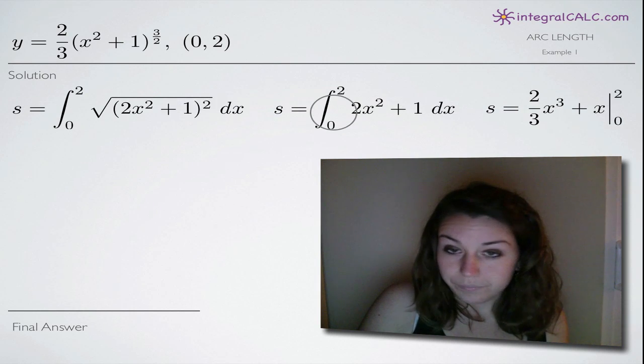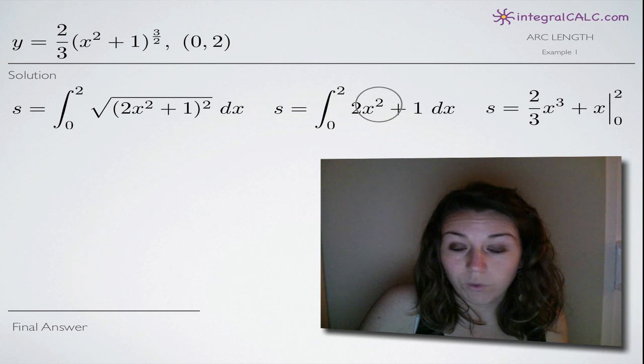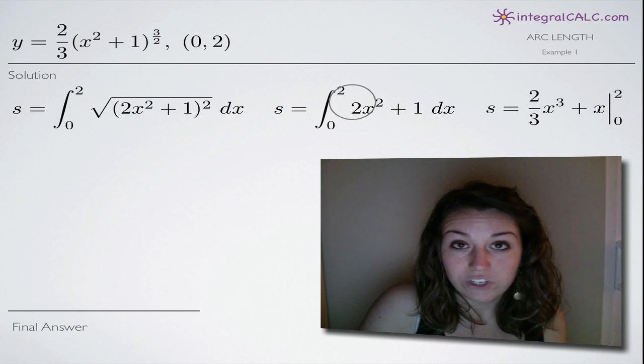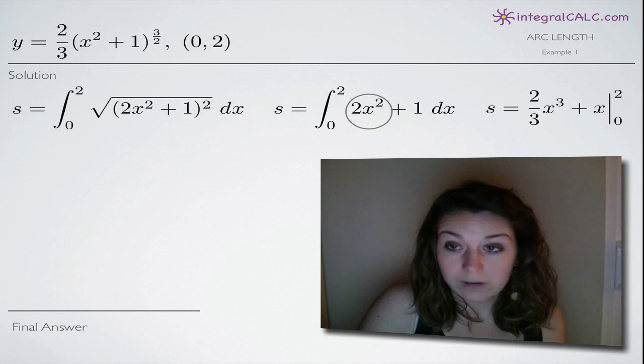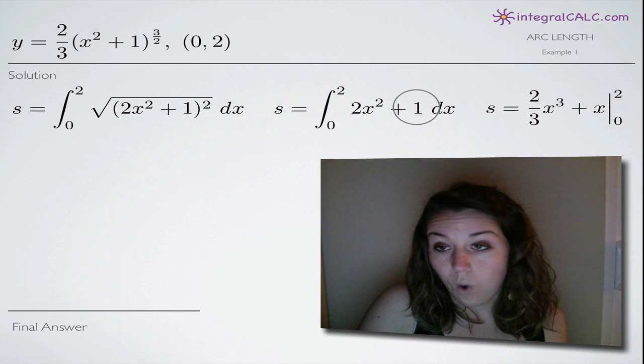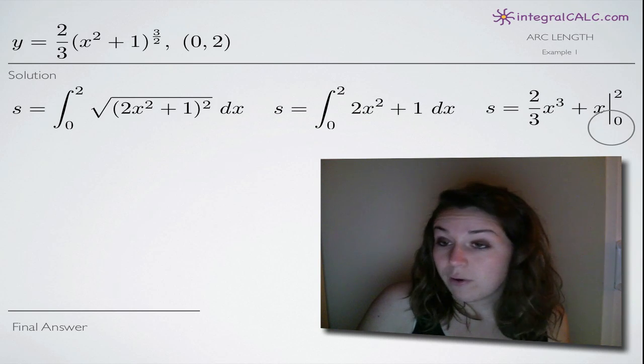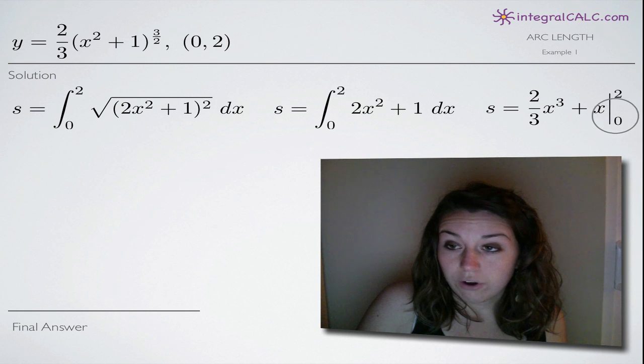So taking the integral, really basic, we add 1 to the exponent to get 3 here and then divide the coefficient 2 by the new exponent, 3. So we get 2 thirds times x cubed and then the integral of 1 is x and that's our integral. So now we're going to evaluate on the range 0 to 2.